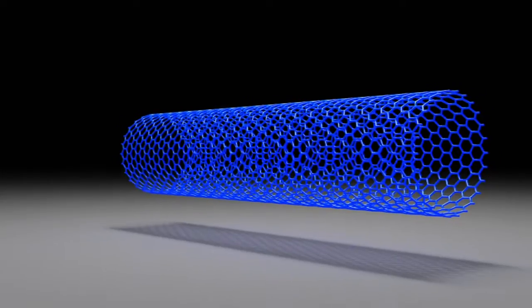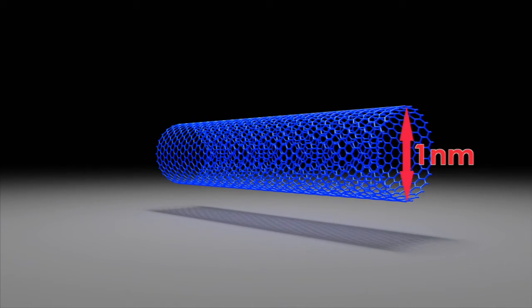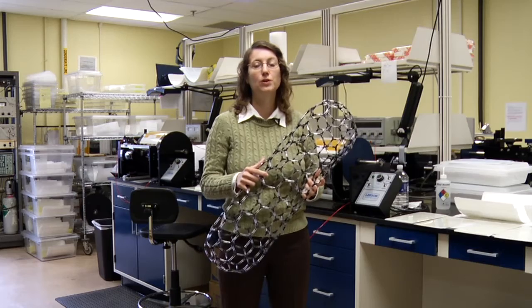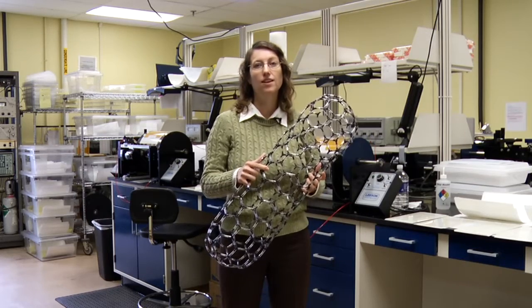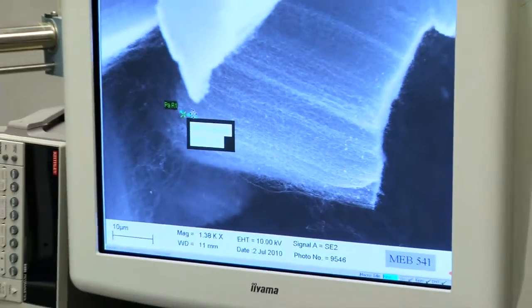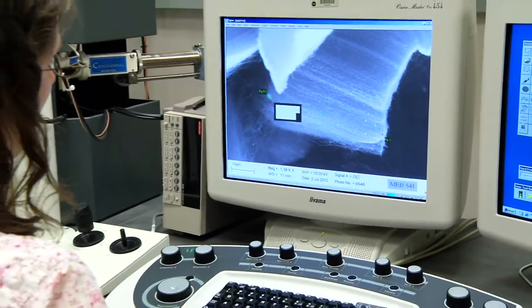It is a hollow tube that's made entirely out of carbon, and the diameter is a nanometer. If this were the size of an actual nanotube and you were to scale me up proportionately, then I would be tall enough to reach the moon. Because the nanotubes are so small, we can only use a scanning electron microscope to be able to see them.